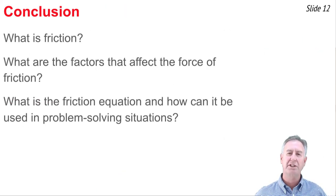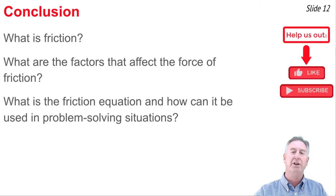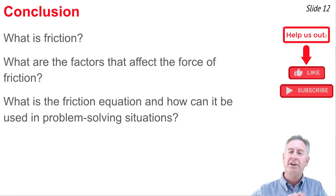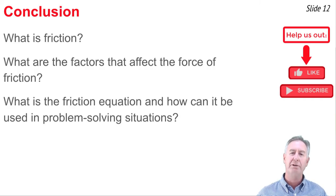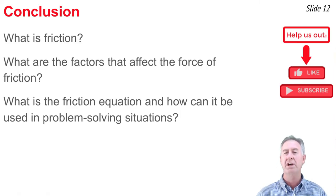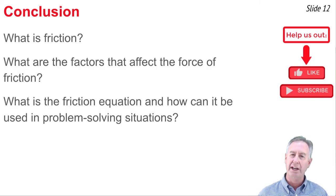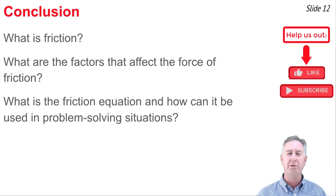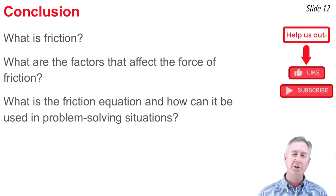In summary, friction is the force that resists the sliding of two surfaces across one another, caused by intermolecular forces between the materials in contact. Two main variables affect friction: the normal force (how strongly the surfaces are pressed together) and the identity of the materials, expressed as a coefficient of static or kinetic friction. The equations for both types are F = mu × F_norm, and we've seen how to apply them in problem-solving.